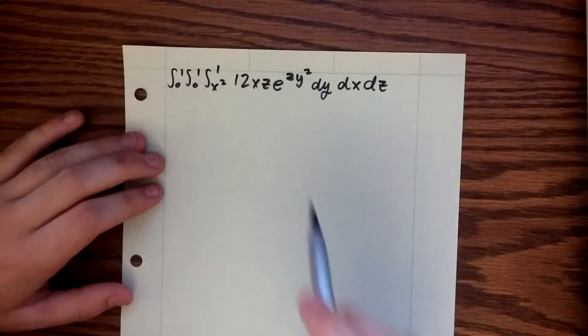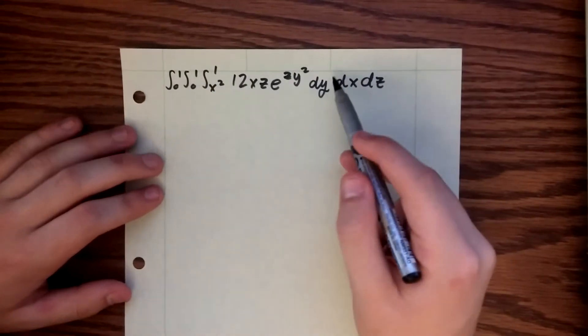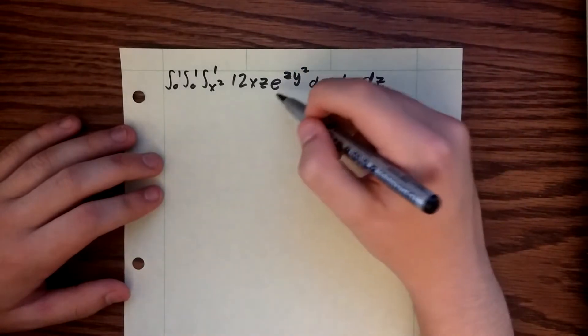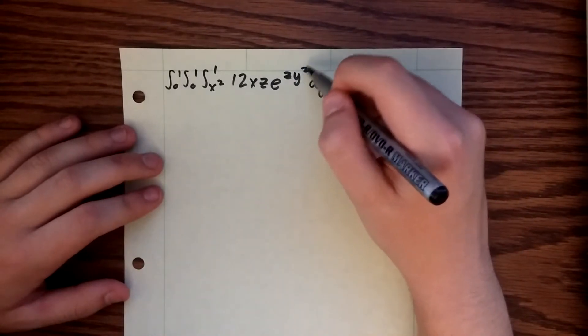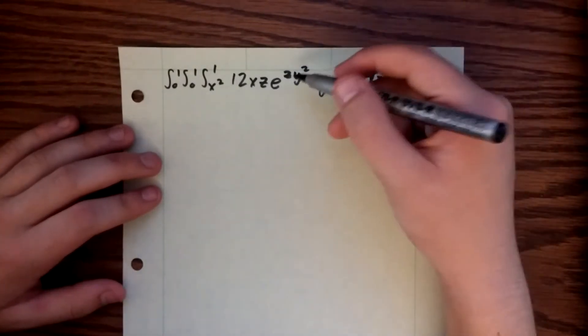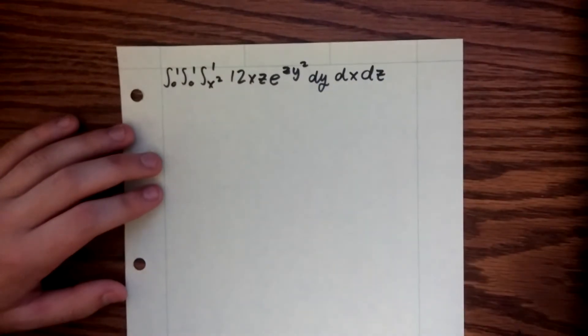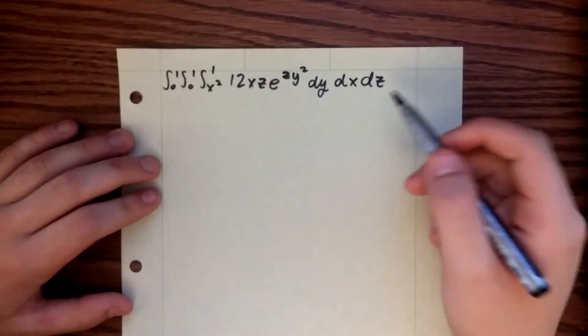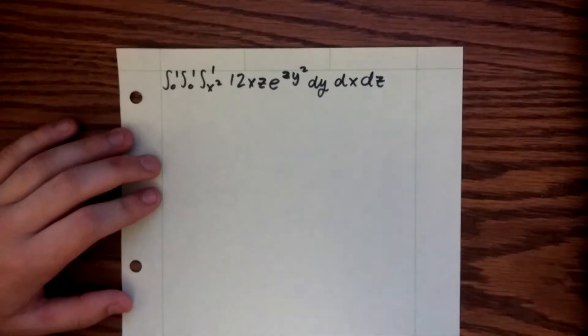So you might be asking why you would switch the order of integration. For this problem, you can see that if you went to integrate with respect to y first, you run into the problem of having y squared as the exponent of e, and you might not be familiar with how to deal with that.